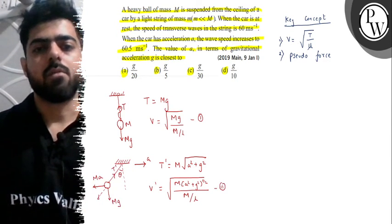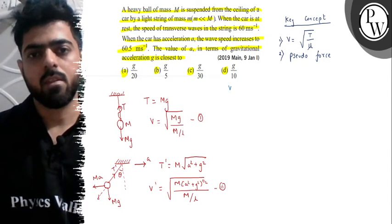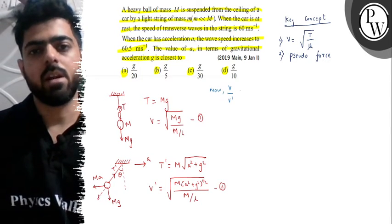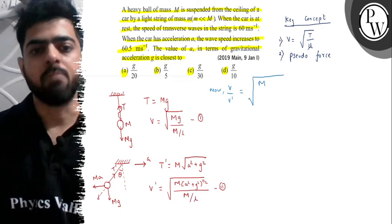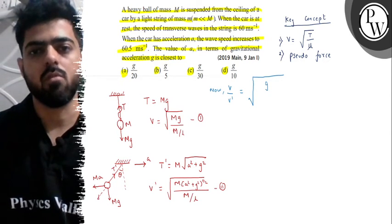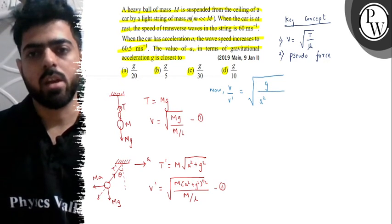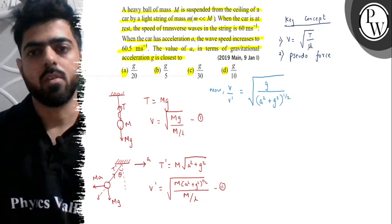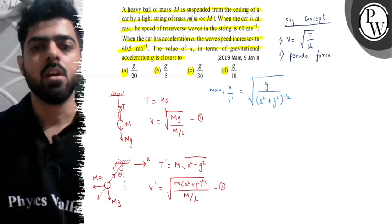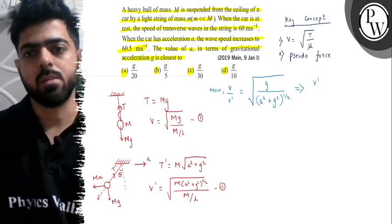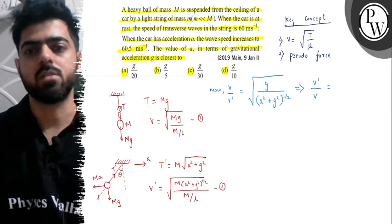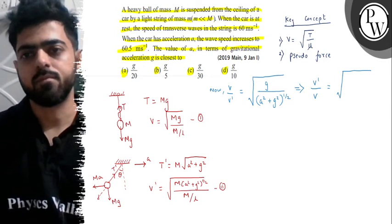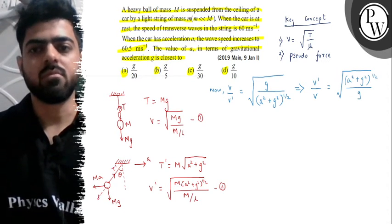Now what are we going to do? Just we have to divide equation 1 and 2. So we will get V-dash upon V. Because we have to divide the second case value by the first case, we will just reciprocate it. So it will become a-square plus g-square raised to 1 by 2, the whole divided by G.